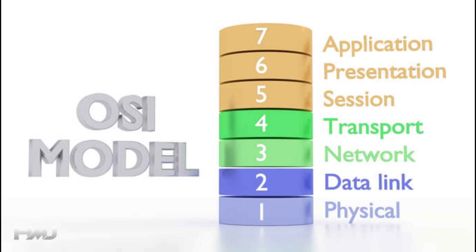Let's talk about two types of data: the network level and the application level. OSI is a reference model for how applications communicate over a network.